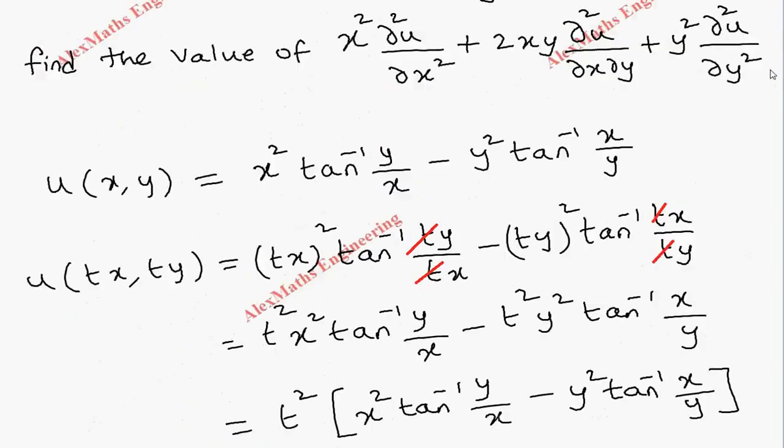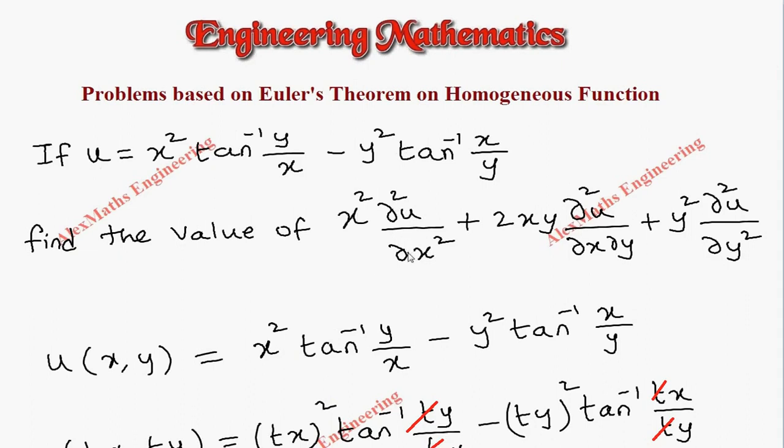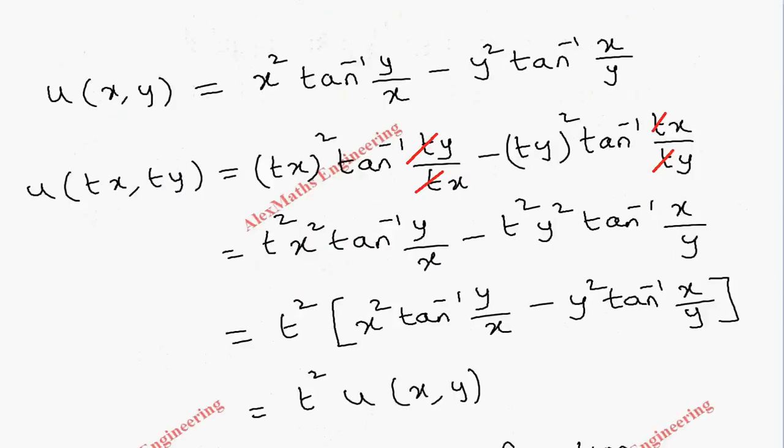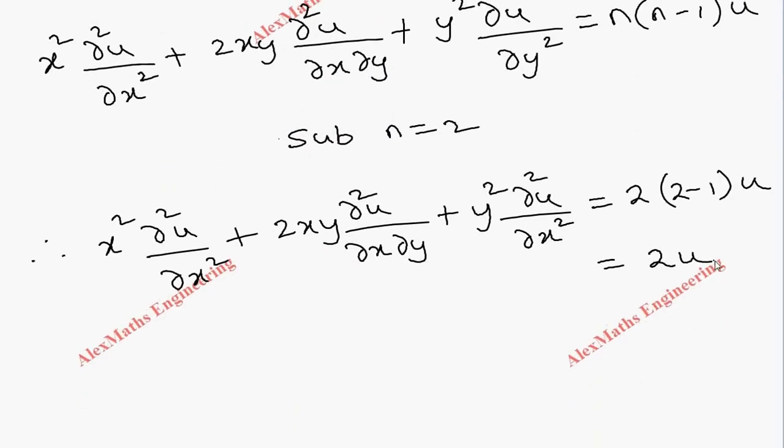So the value of the expression x squared times partial squared u by partial x squared plus 2xy times partial squared u by partial x partial y plus y squared times partial squared u by partial y squared is nothing but 2u, which we got using Euler's theorem.